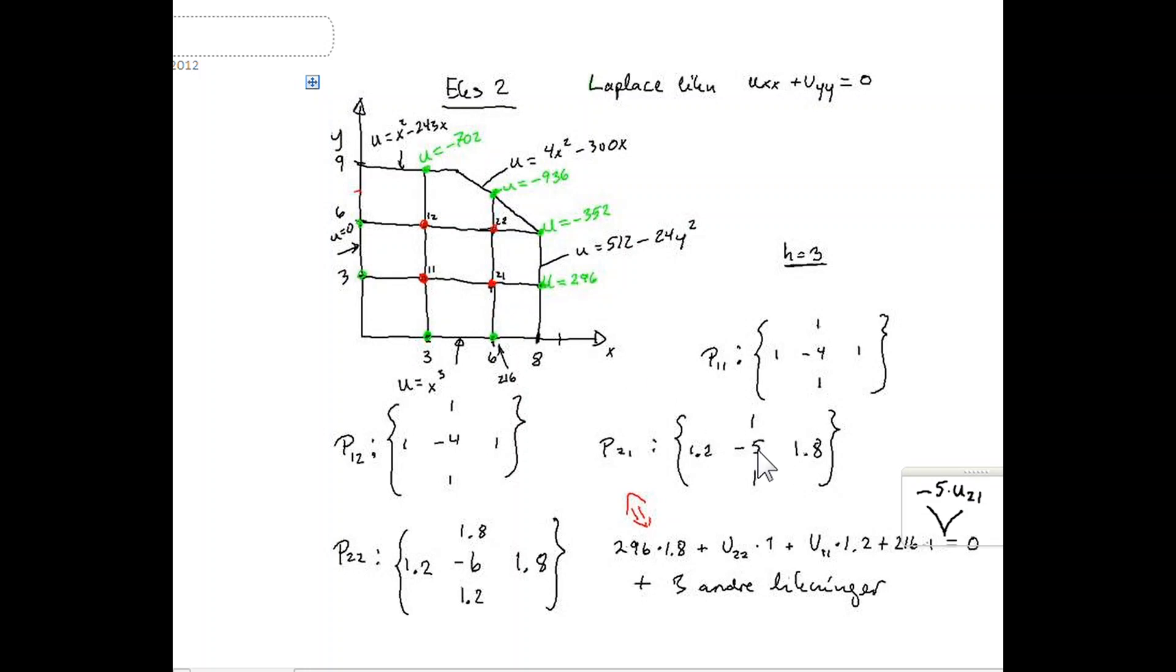To the right, we have to multiply with 1.8. So this node value in this node point, the right point which is 296, is multiplied with 1.8. Then we add with the value on the north. u_2,2 is multiplied with this constant which is 1. And this node point, the value in this node point, is multiplied with 1.2, what we have done here.